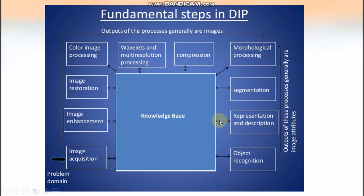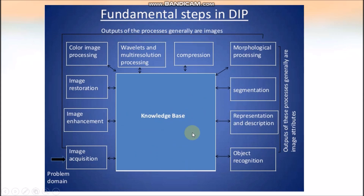Representation and description refers to the methods used to describe the shape of an object. We have different methods that we will see in detail towards the end of the subject. Object recognition means assigning a label to an object based on descriptors — for example, recognizing a certain face in face recognition.